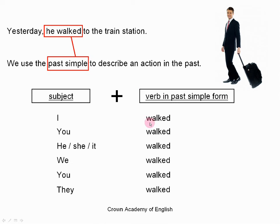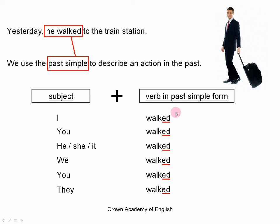Now 'walk' is a regular verb. For regular verbs, we simply add the letters ED to the base verb. So if it is a regular verb, we simply add ED to the verb.